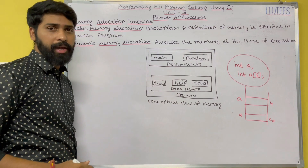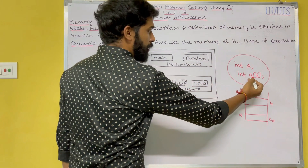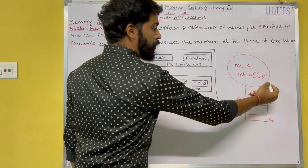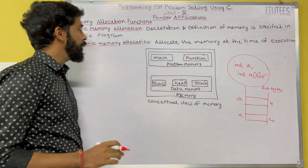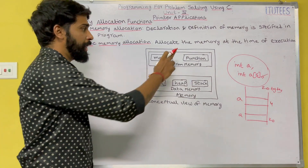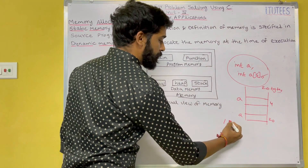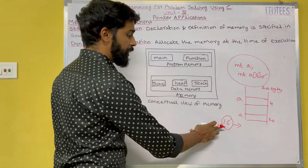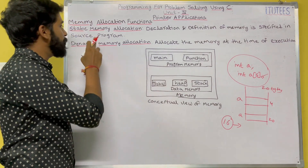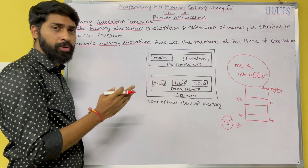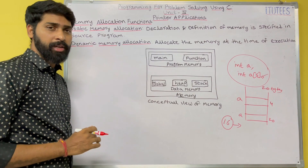Static memory allocation: the declaration and definition of memory is specified in the source program. If I define a[5] in a program, then 5 into 4, 20 bytes of memory is allocated automatically when I declare that array. Dynamic memory allocation allocates memory at the time of execution — at runtime you specify, for example, that you want 16 bytes, and 16 bytes is allocated. Static means memory is allocated before execution; dynamic means memory is allocated at the time of execution.